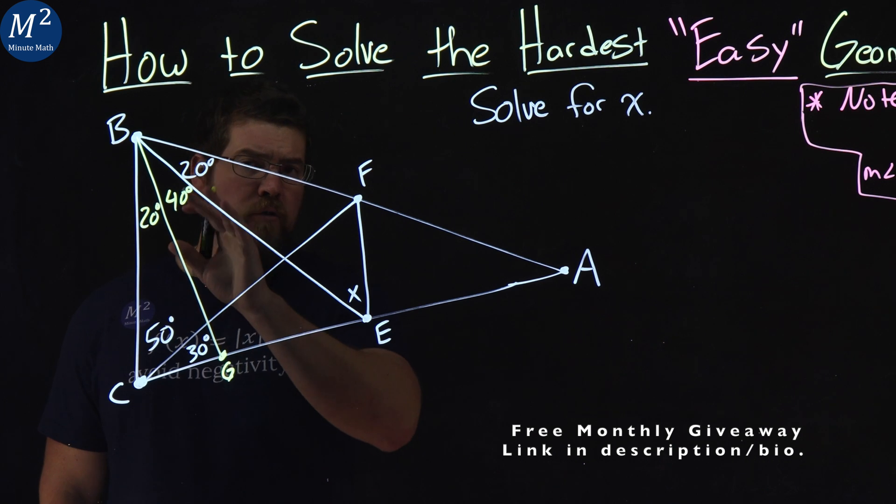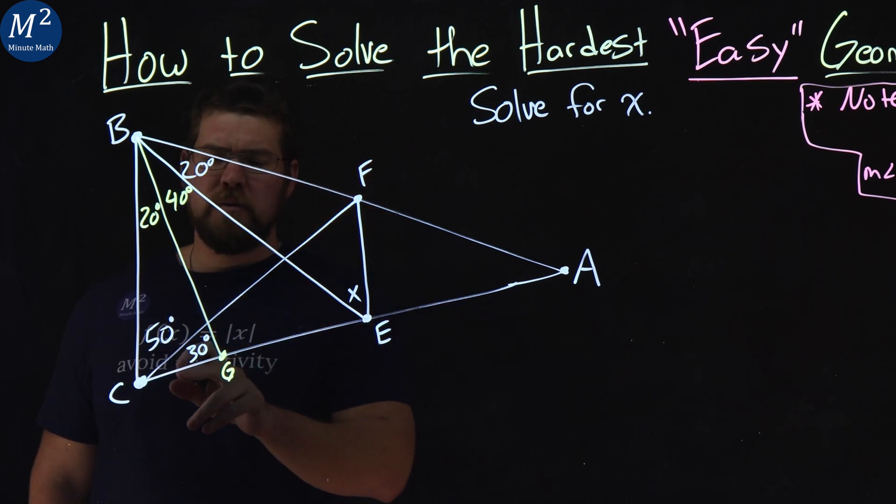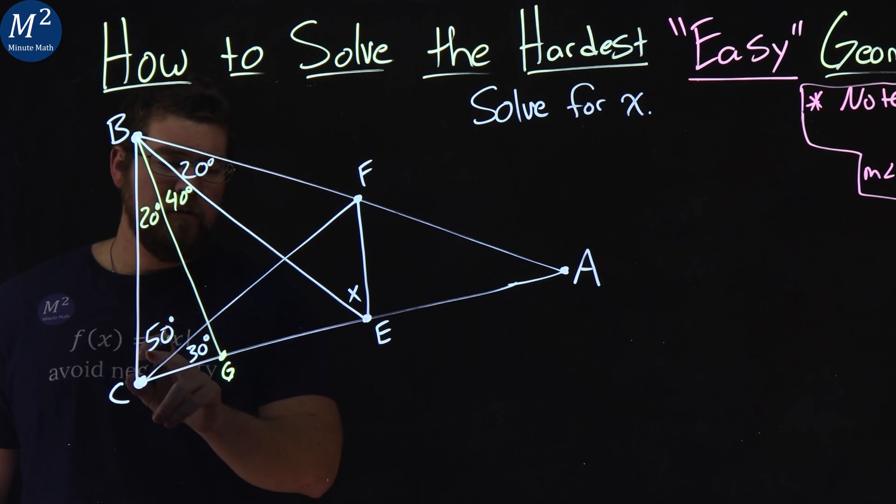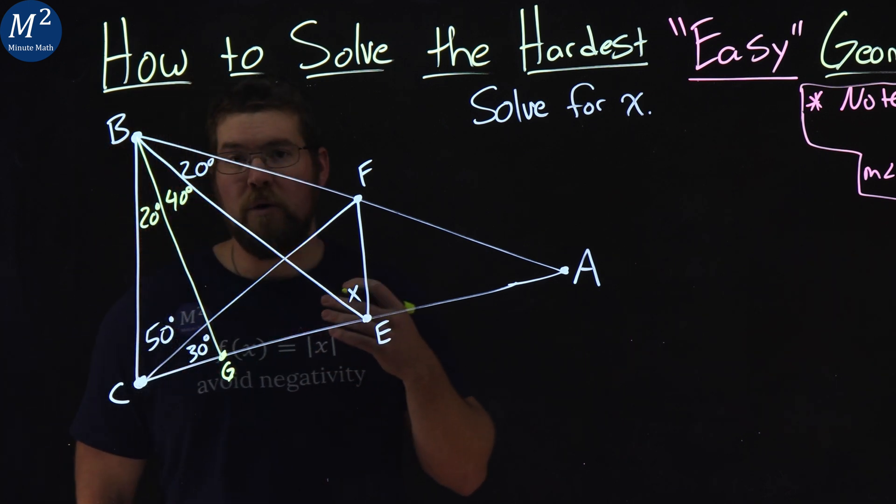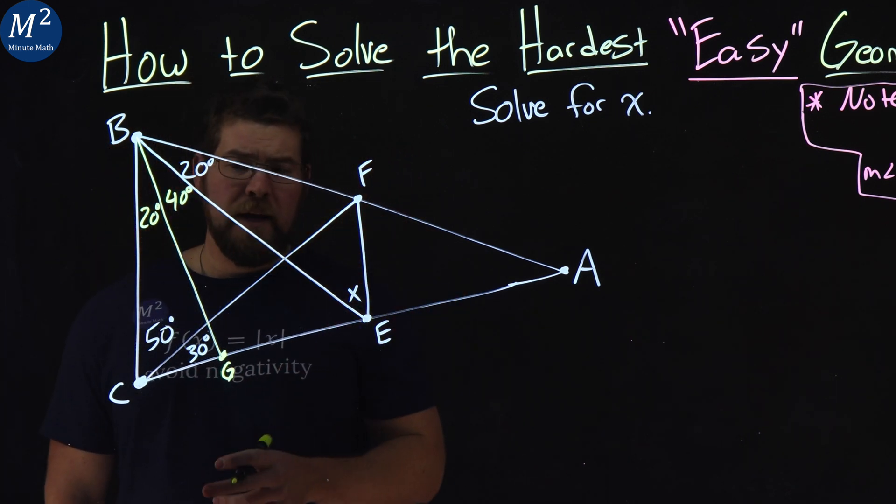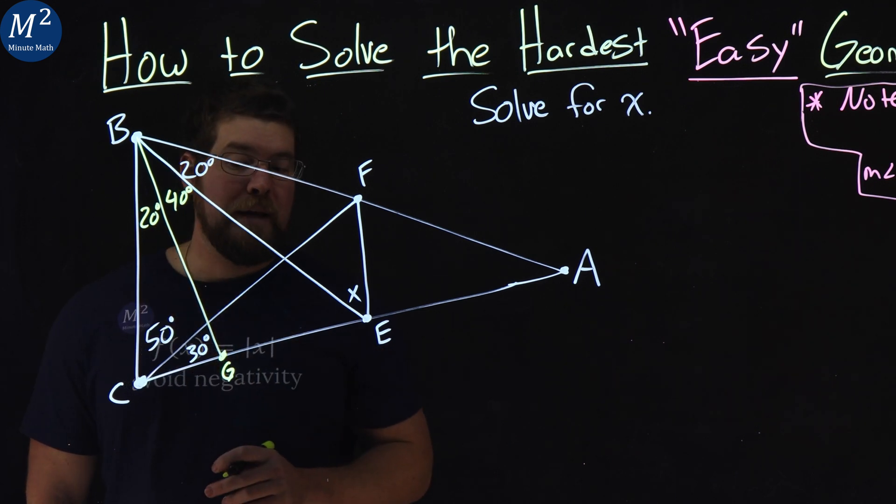Now we know all triangles add up to be 180 degrees, but what about right here? Well, 20 plus 50 plus 30 plus whatever the angle here CGB is has to equal 180. So if we take 180 and subtract 50 and 30, well, we get 100, subtract 20, and we get 80.